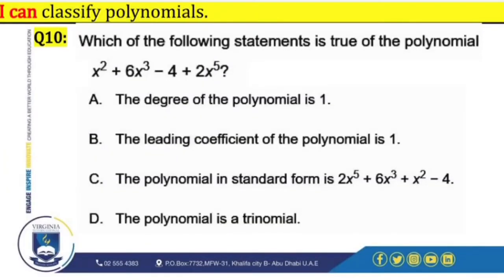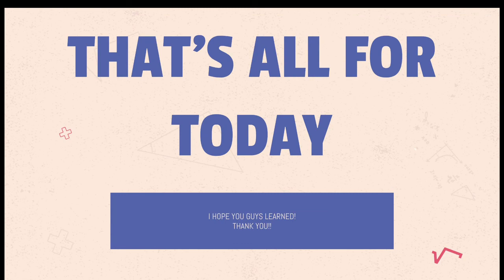Question 5: Which of the following statements is true of the polynomial x² + 6x³ - 4 + 2x⁵? Option A — the degree of the polynomial is 1 — is incorrect, because the degree is 5. Option B — the leading coefficient is 1 — is incorrect, because the leading coefficient is 2. Option C — the polynomial in standard form is 2x⁵ + 6x³ + x² - 4 — is correct. That's all for today, I hope you guys learned. Thank you so much.